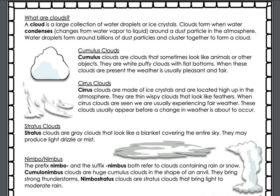Nimbo or nimbus clouds — the prefix nimbo and the suffix nimbus both refer to clouds containing rain or snow. Cumulonimbus clouds are huge cumulus clouds in the shape of an anvil, and they bring strong thunderstorms. Nimbostratus clouds are stratus clouds that bring light to moderate rain.